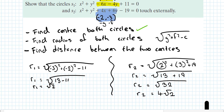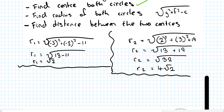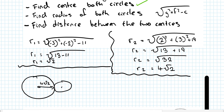We want there to be a relationship between root 2 and 4 root 2 - the two radii. Draw a diagram for yourself. If they touch externally, we want the big radius to be 4 root 2 and the little radius to be root 2. We want the distance d to be 5 root 2, because it's 4 root 2 plus 1 root 2 which would be 5 root 2.